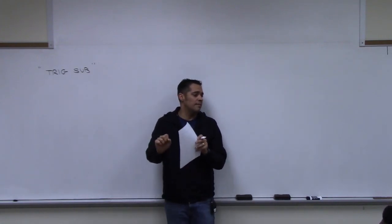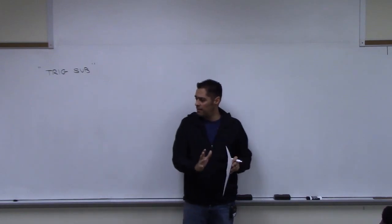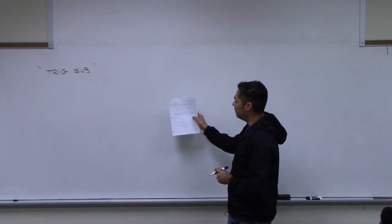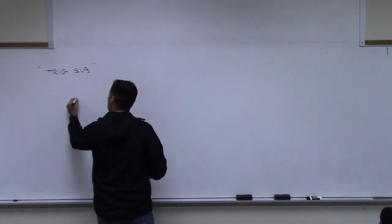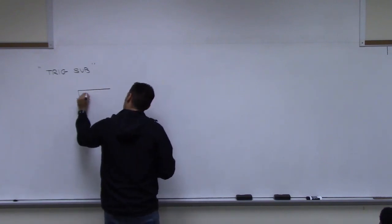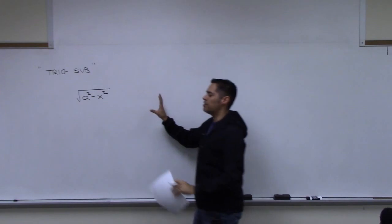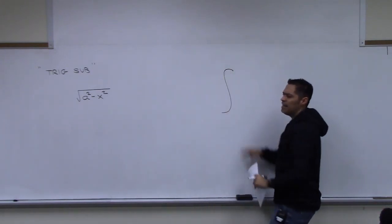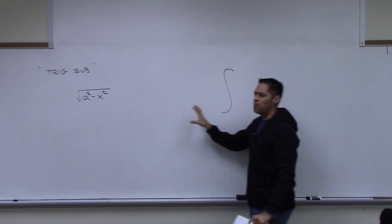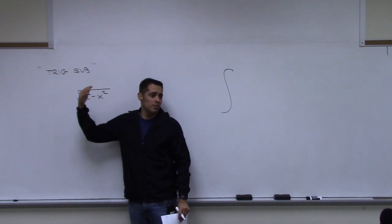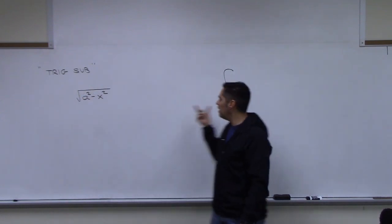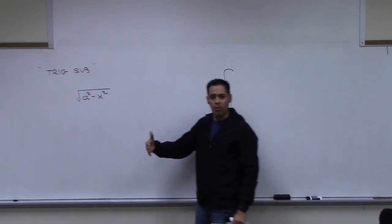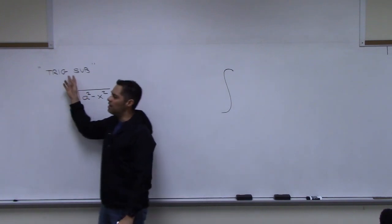There is a big shift right now. We're going from one concept to another — they look different but are connected. With trig substitutions, there's a table, starting with the expression square root of a squared minus x squared. The idea is: if we see this inside an integrand and can't find the antiderivative with prior methods, we try trigonometric substitution.